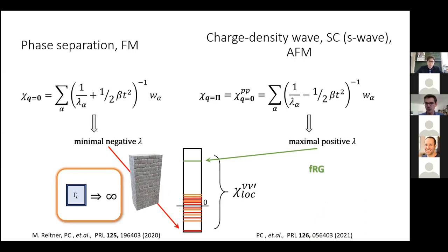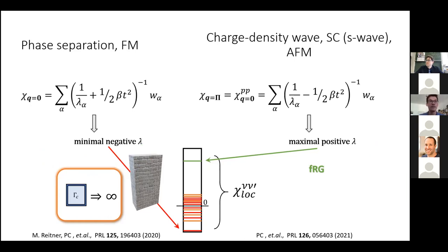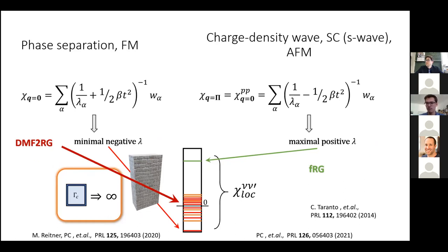Take fRG as an example: a functional renormalization group approach would be capable of describing a maximal positive eigenvalue and the instabilities on the right. However, fRG lacks the possibility to describe sign flips of eigenvalues of the local susceptibility — there are no vertex divergences in fRG methods. This puts a strong constraint on the fRG method. Starting from a correlated starting point, as in the DMF²RG, would overcome this wall. The same applies to the parquet approximation and other series expansions.